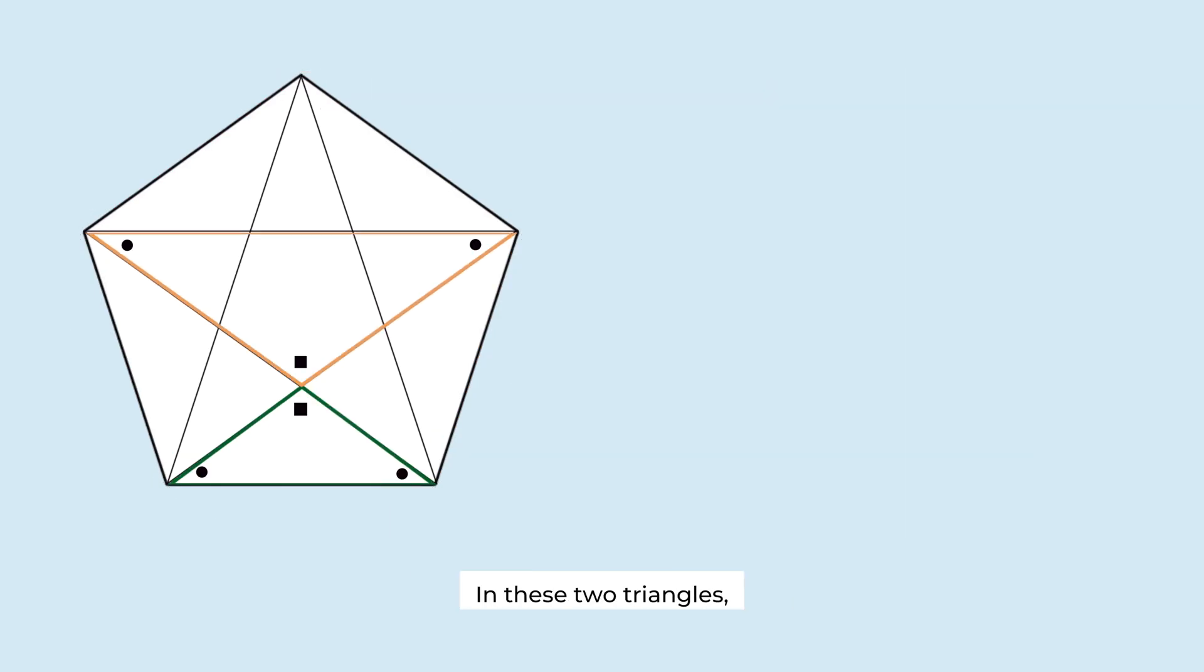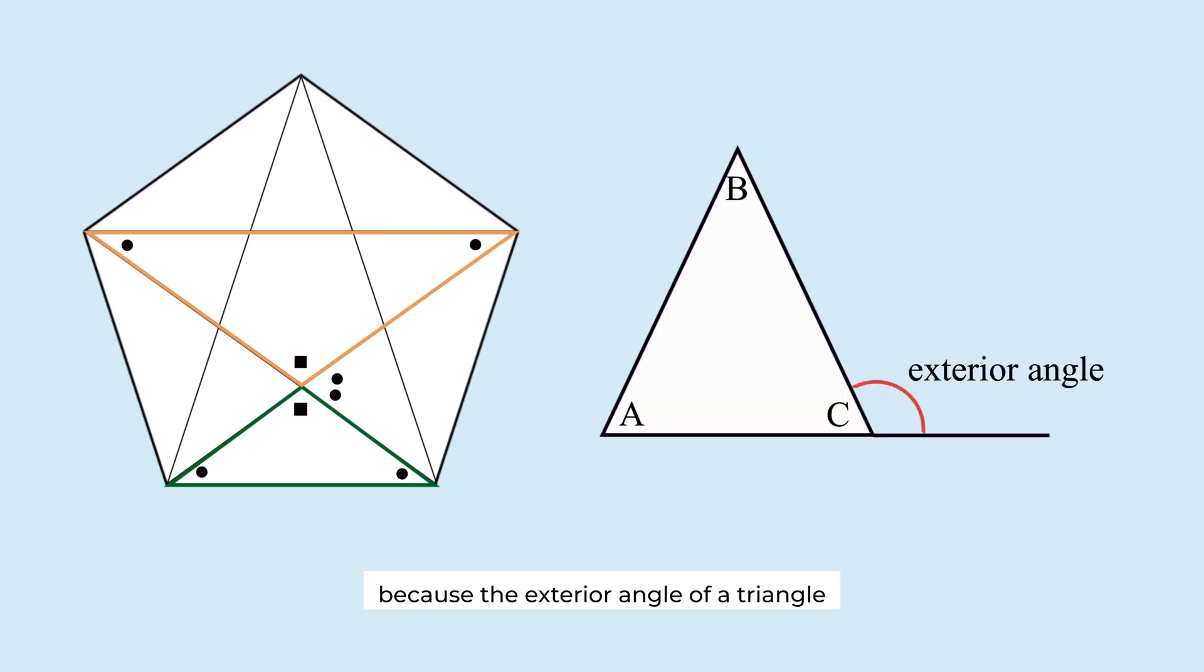In these two triangles, all corresponding angles are equal. So they are similar. And this angle is equal to the sum of these two angles, because the exterior angle of a triangle is equal to the sum of the two opposite interior angles.